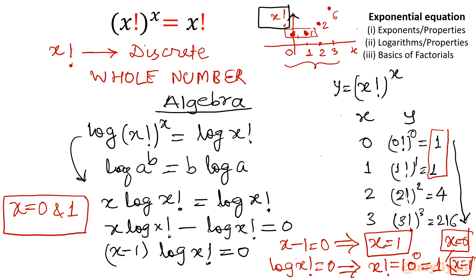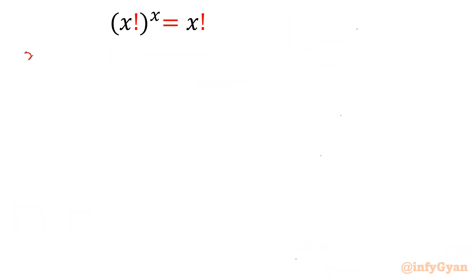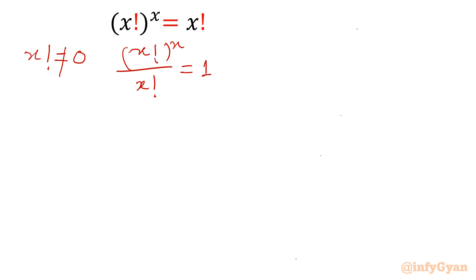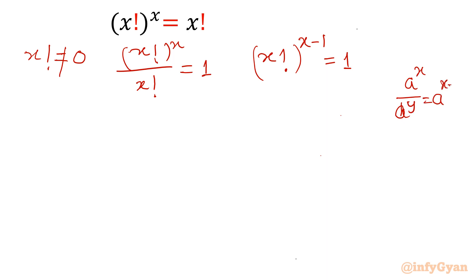Now let's solve this using the property a^b = 1. Since x factorial cannot equal 0, I will divide both sides by x!: x!^x / x! = 1. Using the exponent property a^x / a^y = a^(x−y), this gives x!^(x−1) = 1.